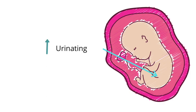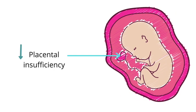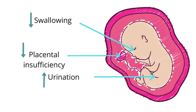The placenta transfers nutrients from the mother to the baby and allows the baby to receive everything it needs for adequate growth and development. So if the placenta is affected, this decreases amniotic fluid production. Overall: swallowing decreases amniotic fluid, placental insufficiency also decreases amniotic fluid, and urination increases amniotic fluid.